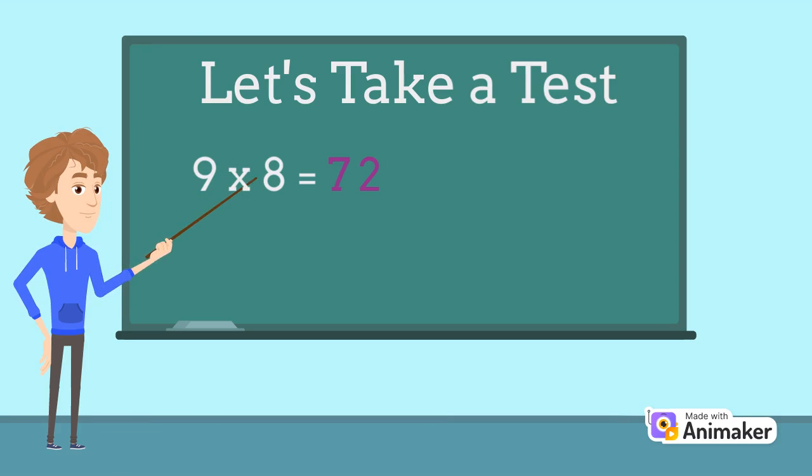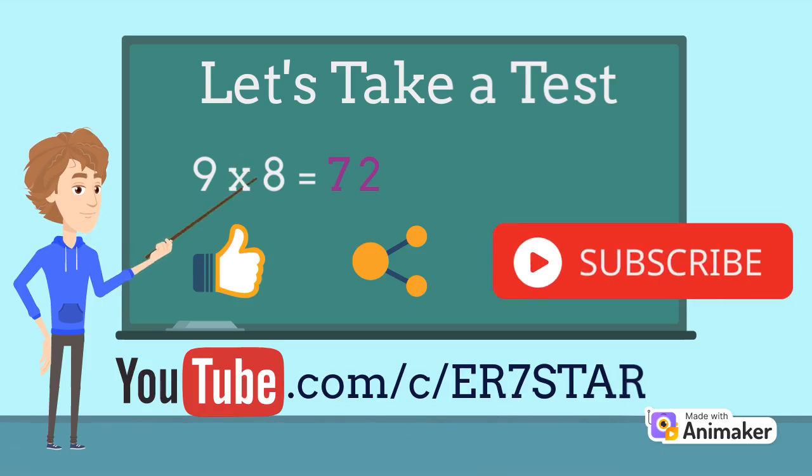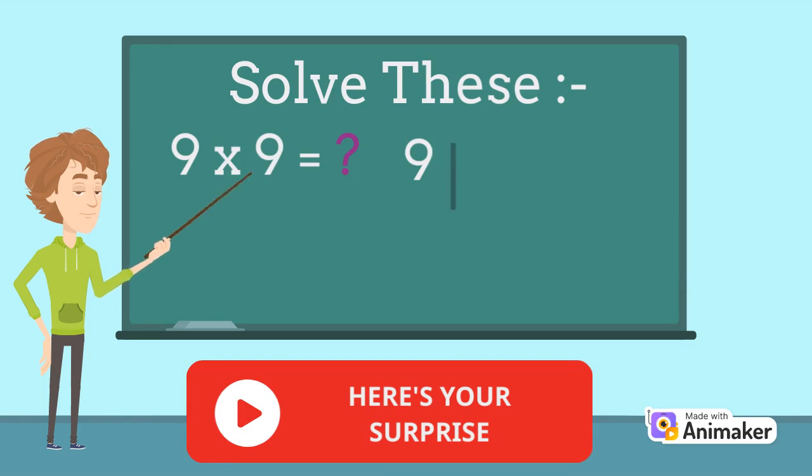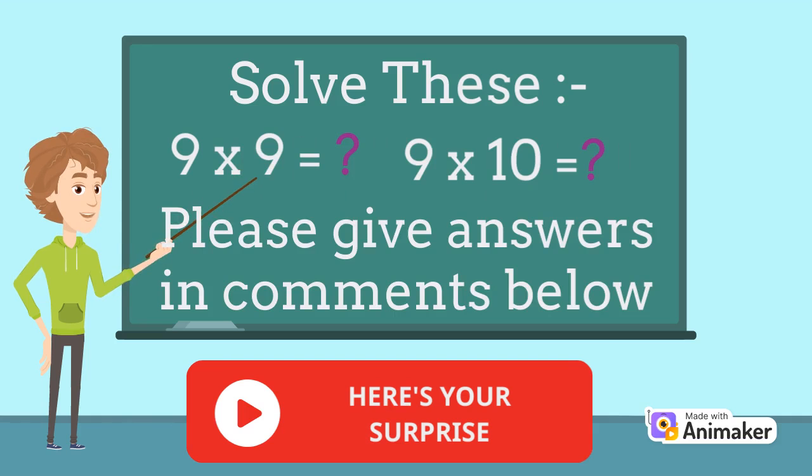So how about you give me the answers in the comments below for finding the results of 9 times 9 and 9 times 10? This trick works only for the first ten numbers of table of 9. I hope now table of 9 will be the easiest table for you. If you have found this trick helpful, then please like, share, and subscribe to We Are Seven Star for more videos. Thanks for watching. Solve these questions and leave the answers in the comments below.